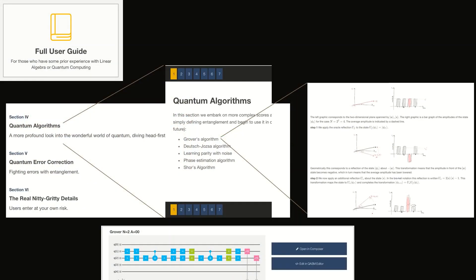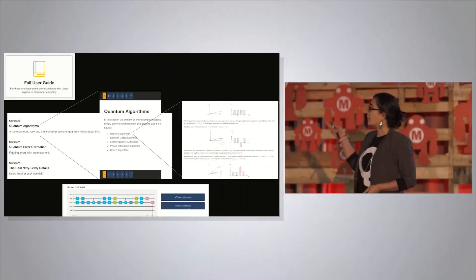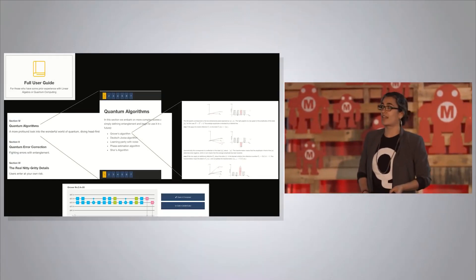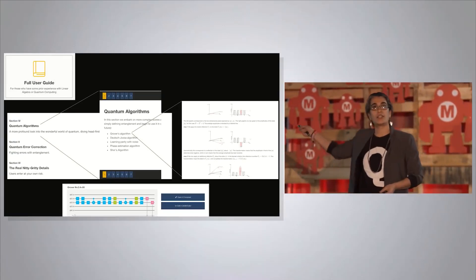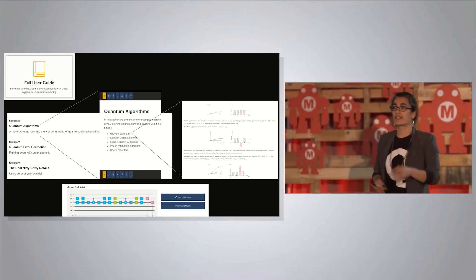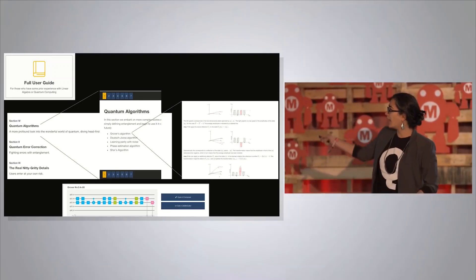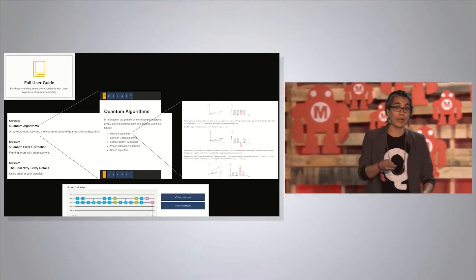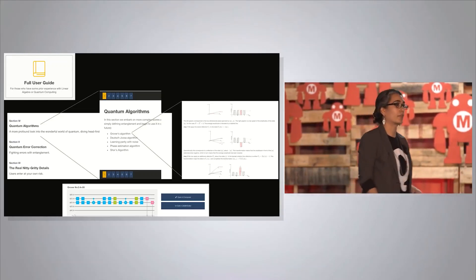Once you get through the beginner's guide and you're really keen, go into the full user guide. This is showing you some of the algorithms we're enabling you to learn about. If you click into Grover's algorithm, you can get a whole derivation of what's going on in that algorithm — we show you how to think about that quantum interference, that amplitude amplification. And this is the sequence of gates you need to implement Grover's algorithm on the real device. You can actually implement that algorithm on a real quantum computer.